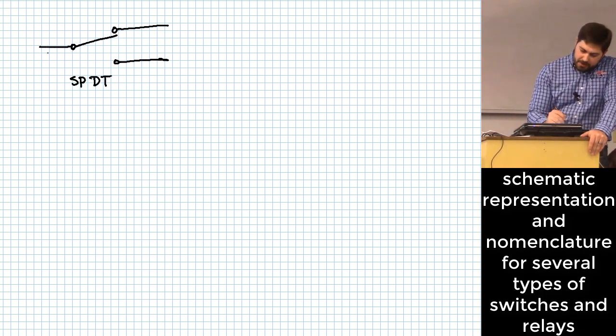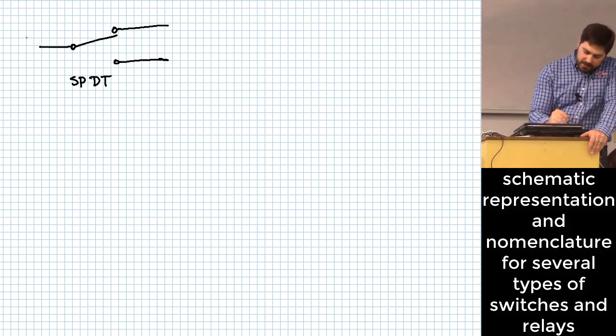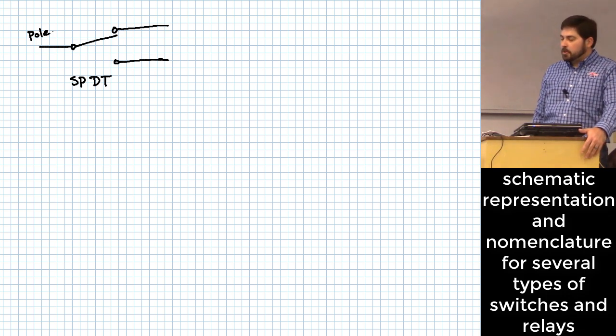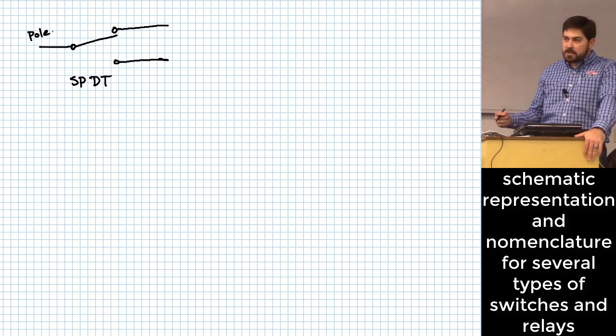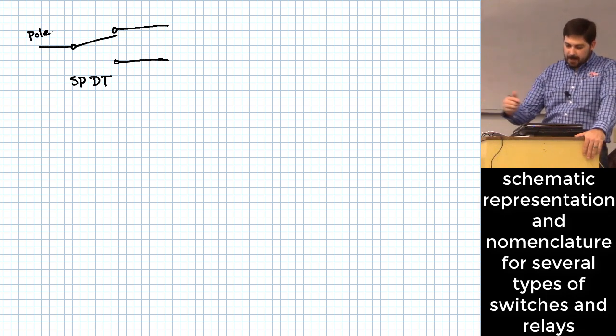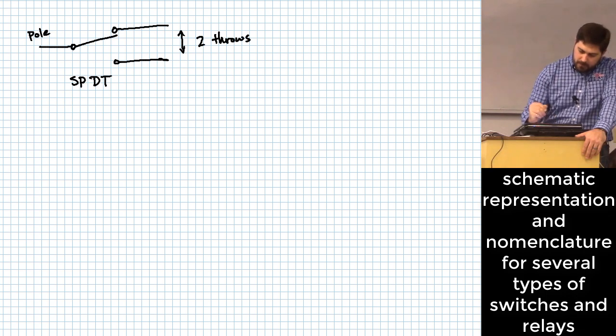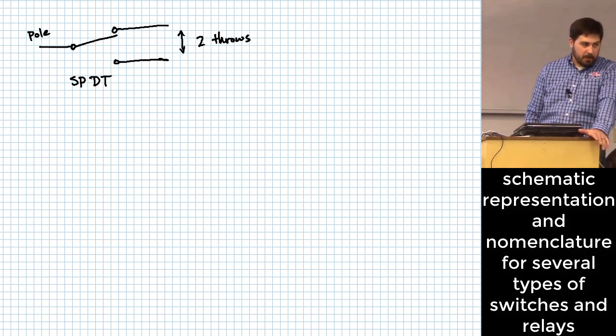The poles are essentially the number of inputs. So this is a pole over here. And basically each pole that you have put into a switch, you then have a number of choices as to where you connect that pole. That number of choices is the number of throws. So two throws. So this is a single pole double throw.